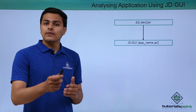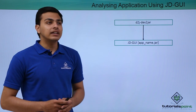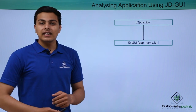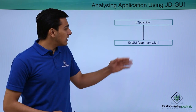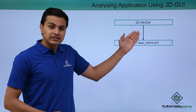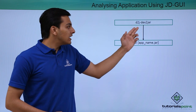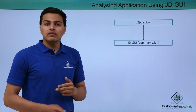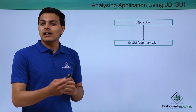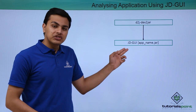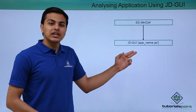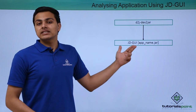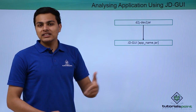The other way is to convert our DEX file into a Java Archive file. Using a utility called dex2jar, we can convert the DEX file into a JAR file, and then with jd-gui — a Java decompiler — we can analyze that Java archive, which is actually our DEX file.